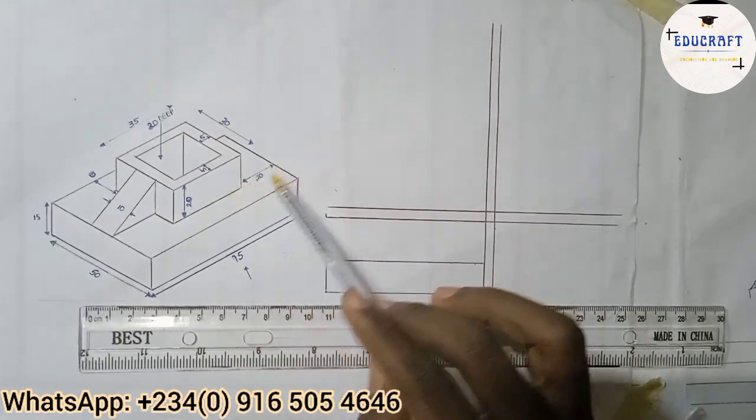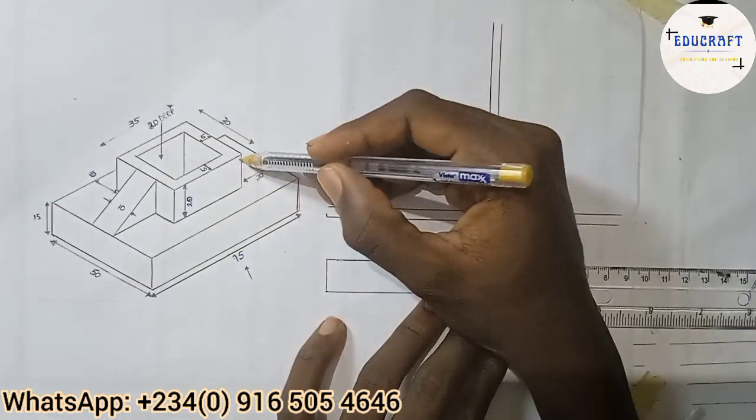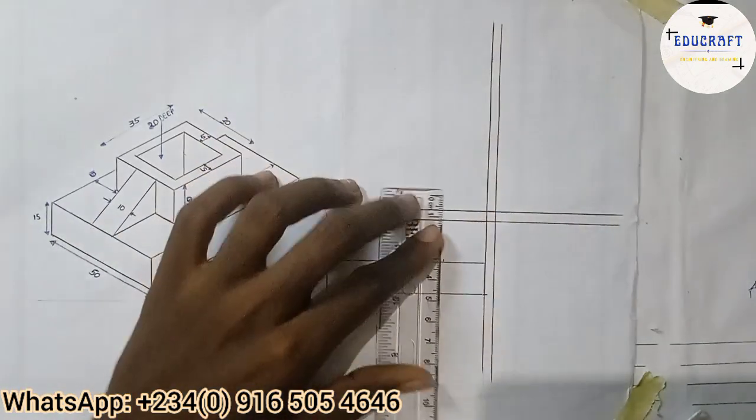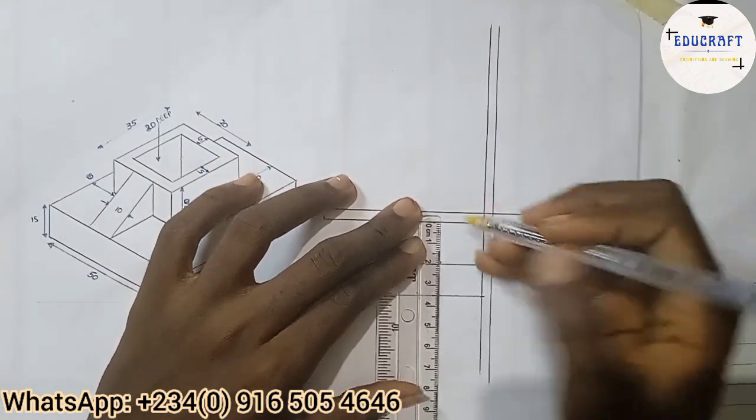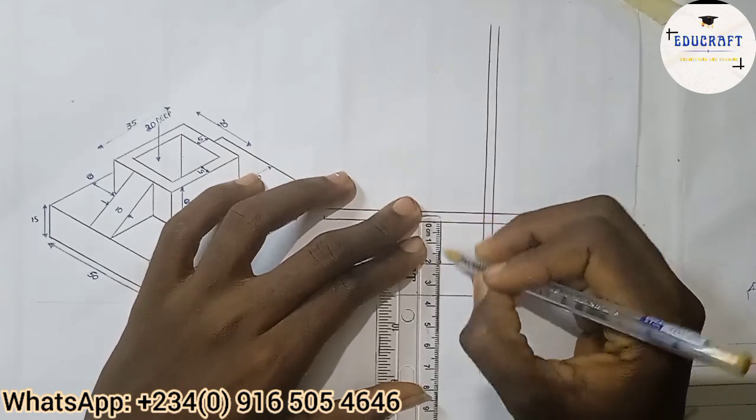Now from here this is 20, so from here this answer will be 20. We'll move 20, so I'll move 20 here, that is 2 cm. I'll move up which is 20 cm. See it automatically - that is the advantage of getting the total length first.